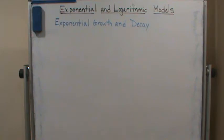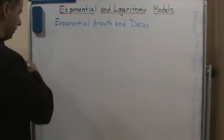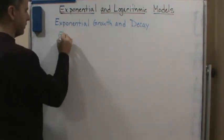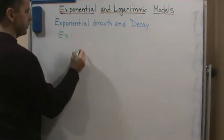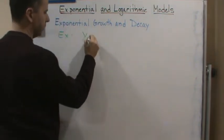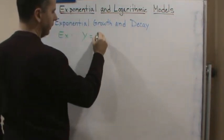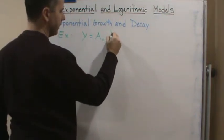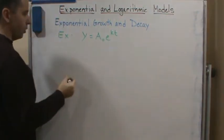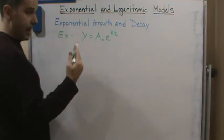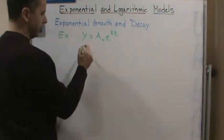So we start with the function y equals A naught e to the kt, and we're told that we start with 10 bacteria, so that's going to be the initial amount. So A naught equals 10.